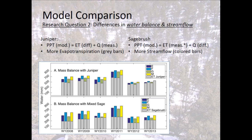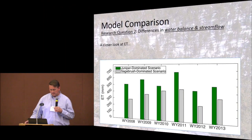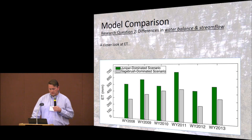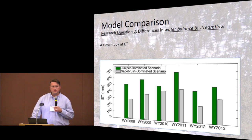Between the two modeled scenarios, we see greater total water available from the juniper vegetation condition, and less water under the sagebrush condition. However, there is a greater allocation of water to evapotranspiration in the tree environment. For the sagebrush system, there is a greater allocation of water to stream flow relative to the juniper model. Looking more closely at evapotranspiration, the green bars represent the juniper model and the gray bars represent the sagebrush model — approximately 300 millimeters of ET for sagebrush and 400 to 500 millimeters for juniper.